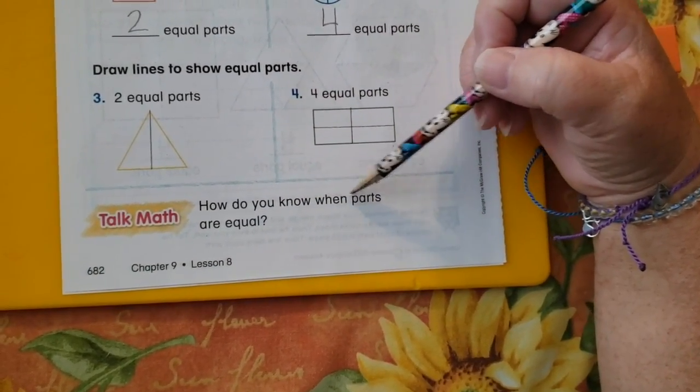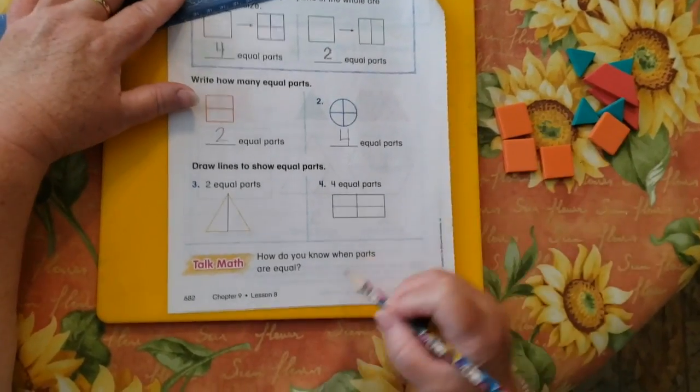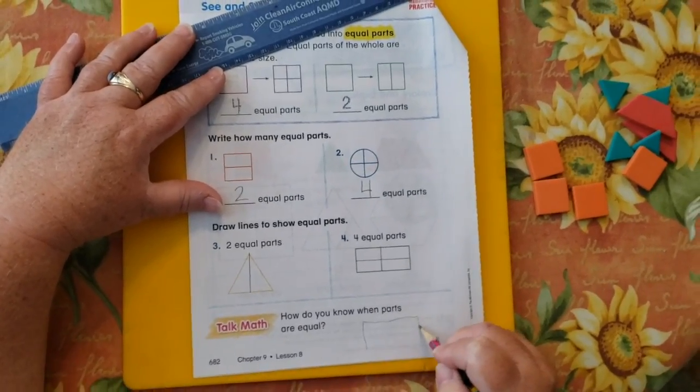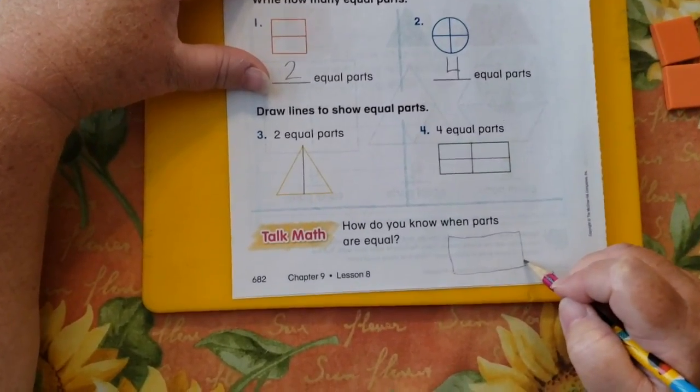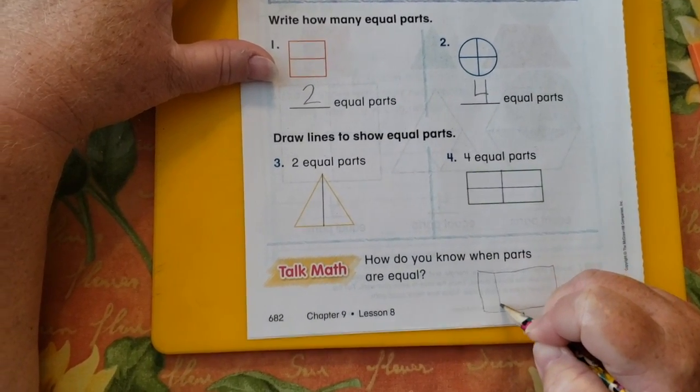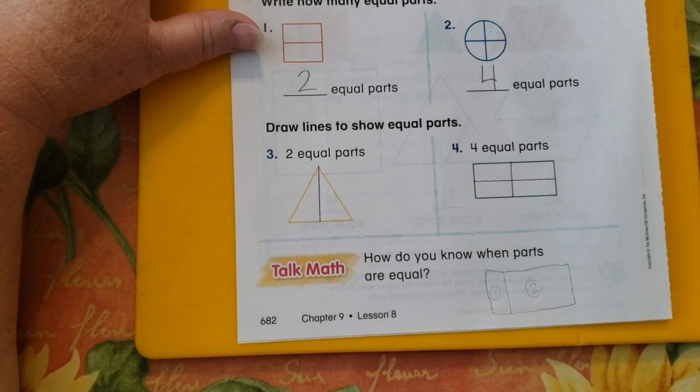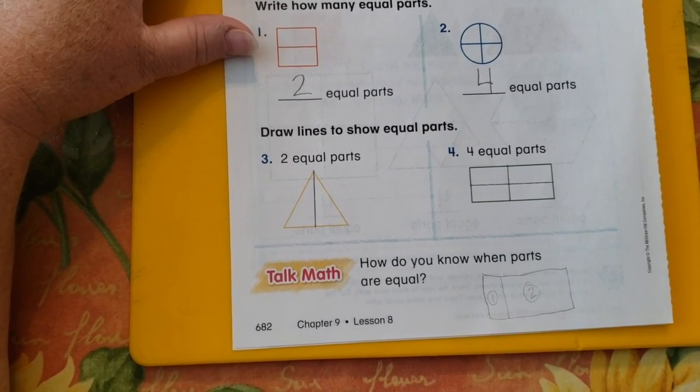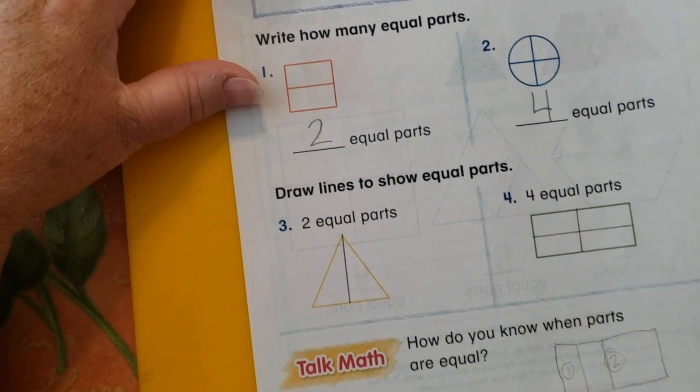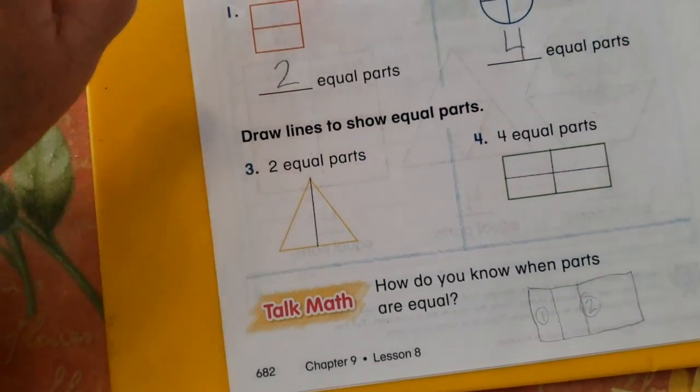How do you know when parts are equal? Well, I bet you would know if your brother or sister had a candy bar and the mom said to give you half. And if they give you this piece and they ate this piece, would that be fair? Of course not. You want half. So it would have to be right about here. So you both would have a square of it. So that just means fair and square.